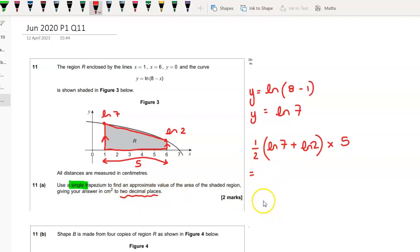It wants the answer to two decimal places, so you can just pop that in your calculator now and get your answer to two decimal places. If it didn't, you'd have to combine your logs using log a plus log b is the same as log a times b.